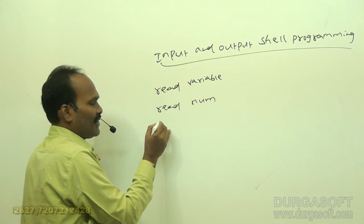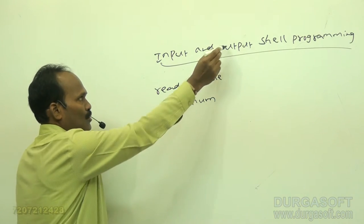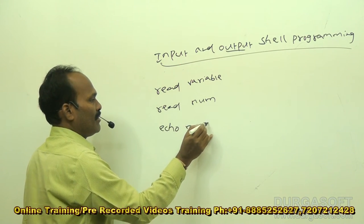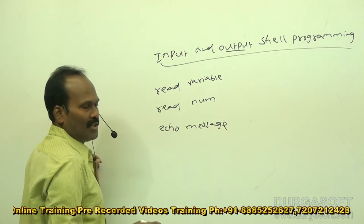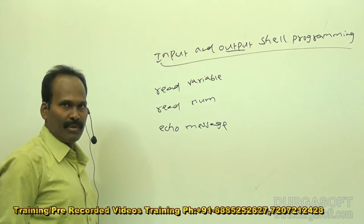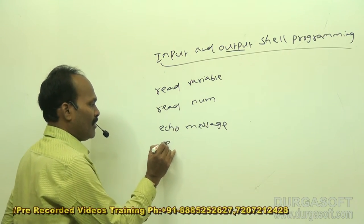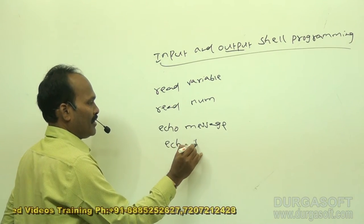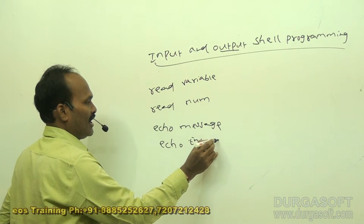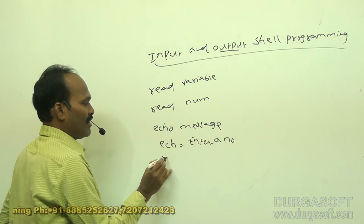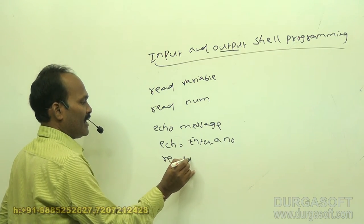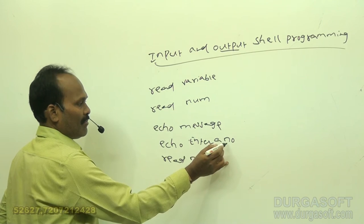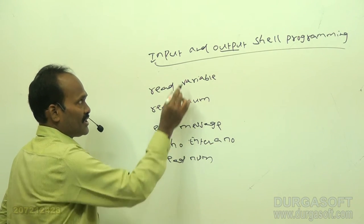For displaying output on the monitor, we use the echo command. There are three types of echo commands which will be discussed in forthcoming sessions. A simple version of echo is: echo followed by a message, for example, echo 'Enter a number'. Then, read num — the number entered by the user will be stored in the variable num.